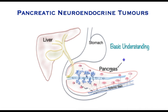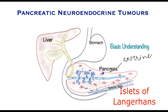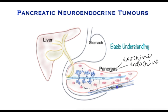This is called the exocrine function of the pancreas. Then there are groups of cells which are quite separate from these, and these produce hormones. Hormones are chemicals that are passed directly from these cells into blood vessels and finally into this vein, and then taken to the rest of the body, because these will have effects far removed from the area where they are produced.